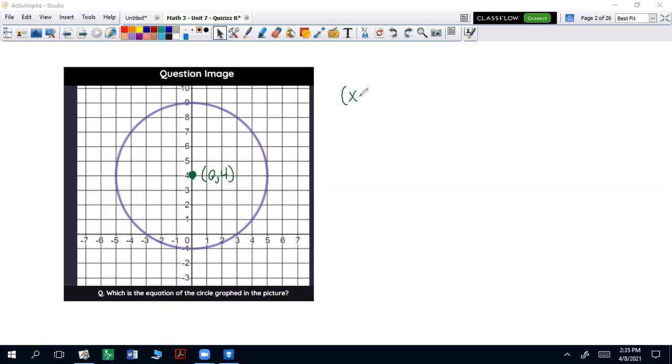Remember the equation looks like this: (x-h)² + (y-k)² = r², where (h,k) is the center and r is the radius.